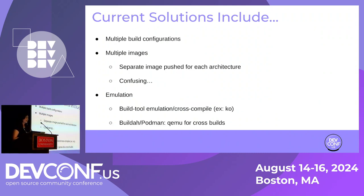We have a bunch of current solutions. You can have multiple build configurations for each architecture, building them separately and creating separate images with separate names or tags — but then you have to keep track of all of this, which can be tedious and confusing. There is emulation, where you can build images of different architectures on your same machine using something like QEMU user static, which is what Podman and Buildah do under the hood. But emulation can take a hit on performance — it can be pretty slow. There is also cross-compilation as an option.